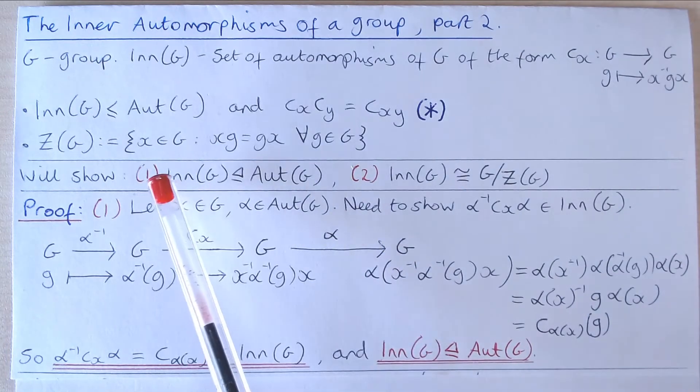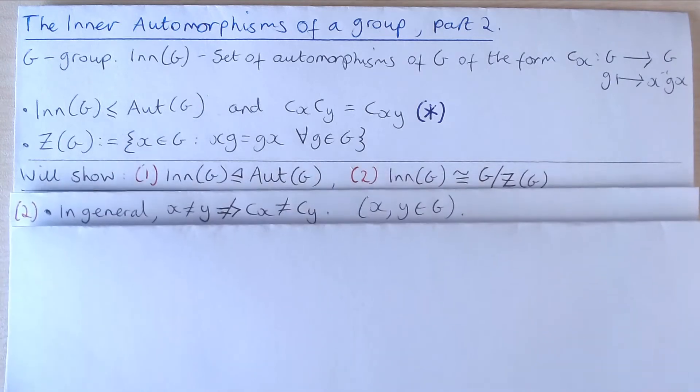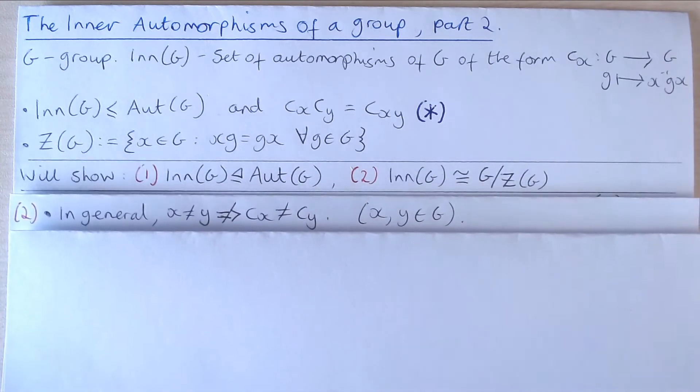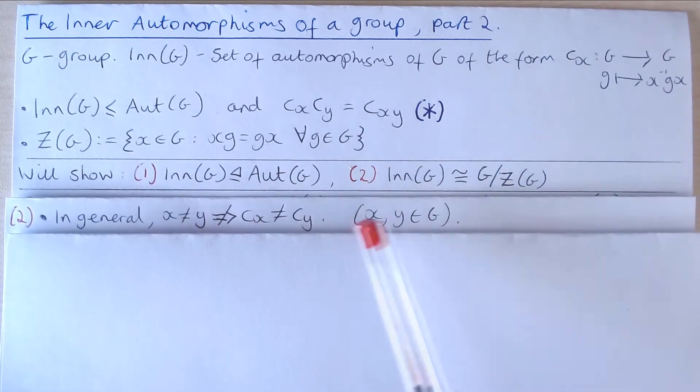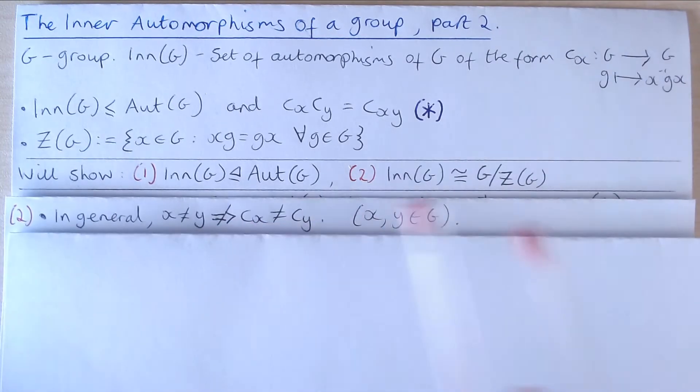Now that we've established part one we will establish part two. We first note that in general distinct elements of our group G do not give rise to distinct inner automorphisms of G.